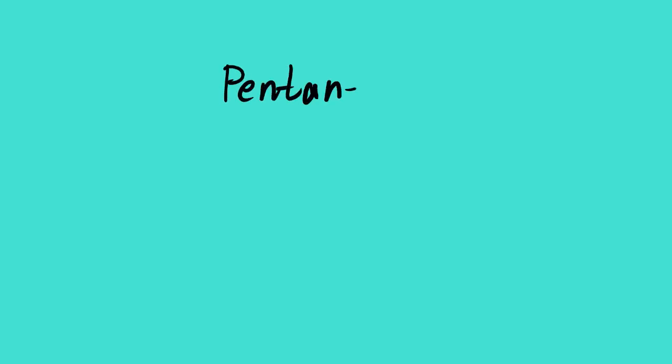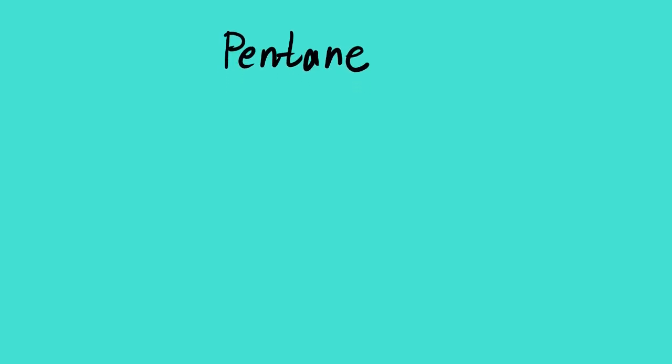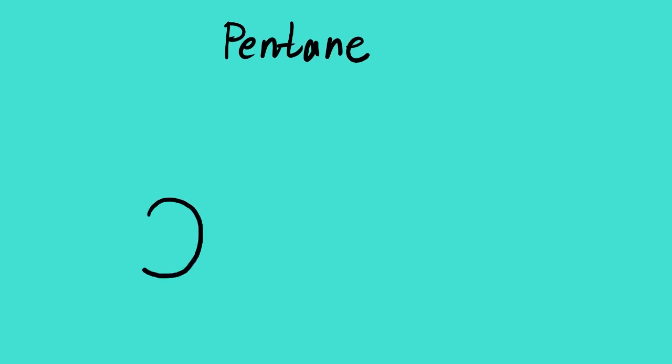Let us draw a Newman projection for pentane. Before we do that, we can start by trying to draw this using a condensed and a Lewis dot diagram so that we can get a clear picture.